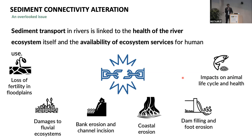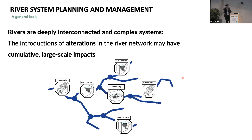For example, loss and degradation of the ecosystem, both on floodplains and on the fluvial ecosystem, but also erosion of the coastal landscape because of sediment starvation, dam filling, etc. This is a huge problem because no river, especially large rivers, are under a single type of alteration. Usually we have multiple alterations on the same river system, and this causes the alteration of sediment connectivity to have a cumulative effect, making it difficult to understand the big picture from a single event or alteration.